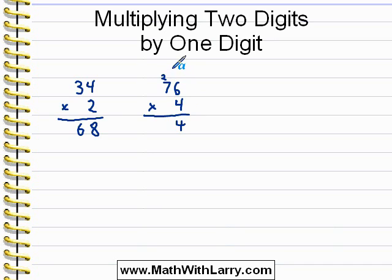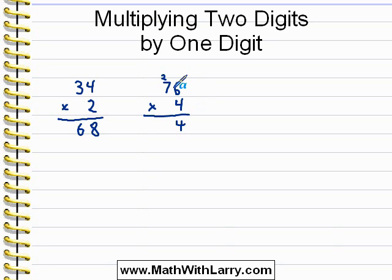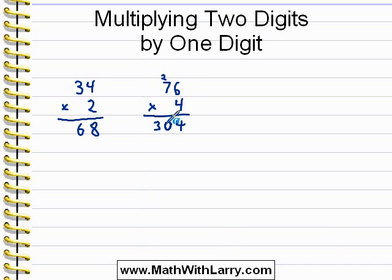Now I'll do 4 times 7. Remember that the 7 is really seven tens, which represents 70. So 7 times 4 is 28, but since we're dealing with tens, it's not 28 — it's really 280. Stated another way, it is 28 tens, which means I'll write 28 ending in the tens column. Before I do that though, I have to add in the two tens from my previous calculation. So it's actually 28 tens plus 2 tens, which is 30 tens. And I'll write that as 30 in the tens place, keeping in mind that 30 tens is really the same as 300.